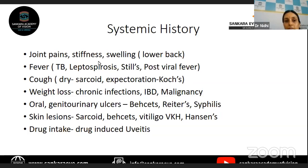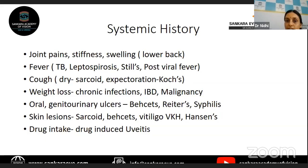Not just the peripheral joints — even the axial skeleton has to be asked about, particularly in young people. In children, JIA is more common for uveitis. In adults, it is not RA — rheumatoid arthritis is not very common — but it is more likely ankylosing spondylitis. Hence, asking for upper or lower back pain is very important, because patients may not tell you unless you actually ask for it.